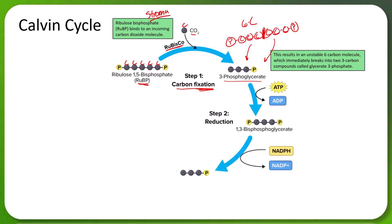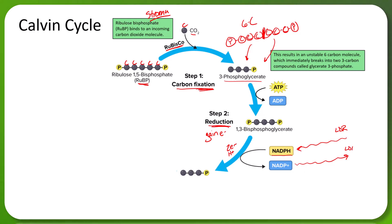Once carbon fixation is complete, we go into step 2, which is a reduction. Remember OIL RIG — oxidation is the loss of electrons, and reduction is the gain of electrons. So all of our 3-phosphoglycerate molecules are going to be reduced, meaning they're going to gain electrons. What gives electrons to the 3-phosphoglycerate molecules is the electron carrier NADPH, which is coming from the light-dependent reactions where it was created. Once NADPH arrives at the stroma, it drops off a pair of electrons and a hydrogen ion, and is then converted into NADP+ and heads back to the light-dependent reactions to be reduced again.